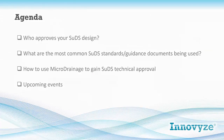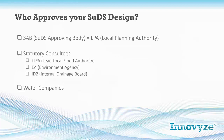Looking at what we'll cover today: I want to examine who is actually approving our SuDS designs, then move on to the most common standards and guidance documents used for technical submissions, and run through a workflow process using Micro Drainage to gain that all-important SuDS technical approval. Two key areas are delaying planning applications — initial drainage calculations and connecting a highway into an existing highway under a Section 278 agreement.